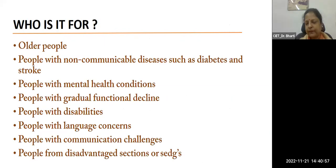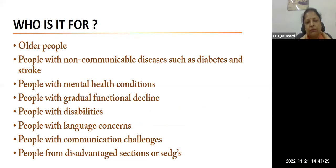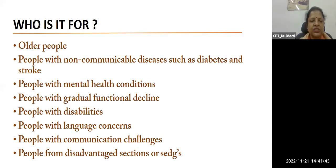For whom is assistive technology or accessible digital content required? It is required for older people, for people with non-communicable diseases such as diabetes and strokes, for people with mental health conditions, for people with disabilities, for those with gradual functional decline where muscle grip, vision, hearing, or mobility is declining. Of course, persons with disabilities, persons with language concerns, persons with communication challenges, and persons from disadvantaged sections - SEDGs.